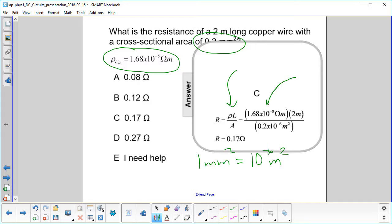Here's the resistivity. Here's the length. And see how we've converted the 0.2 millimeters into 0.2 times 10 to the minus sixth square meters. Carry out the math, and you get answer C.